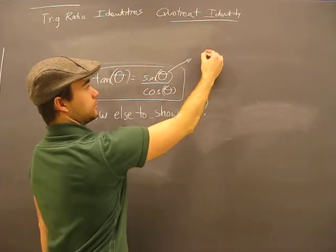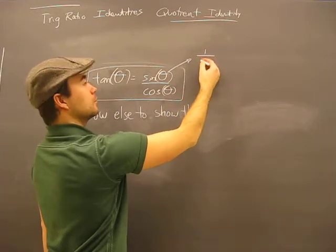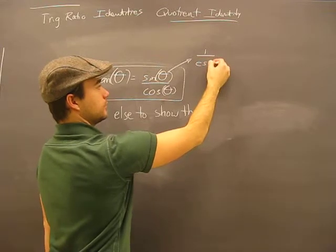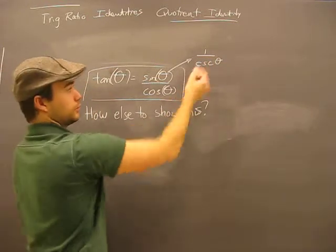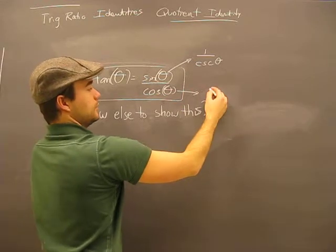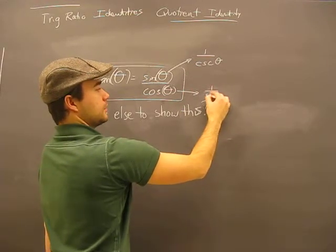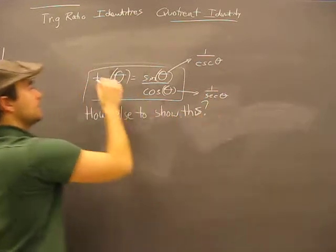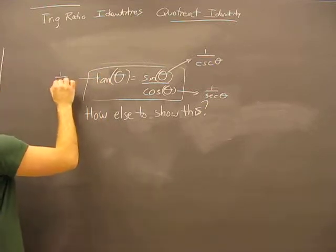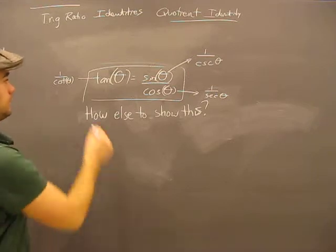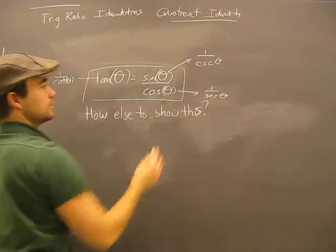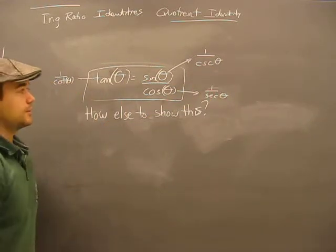This thing here can also equal 1 over cosecant. That sine theta can also equal 1 over cosecant. Cosine theta can equal 1 over secant theta. Tangent can equal 1 over cotangent. So what we have here is these are reciprocal trig identities. So we have to remember that they might get thrown into the mix.